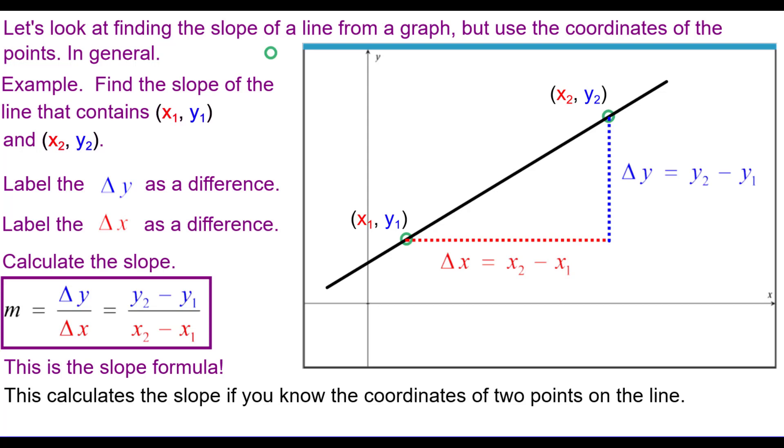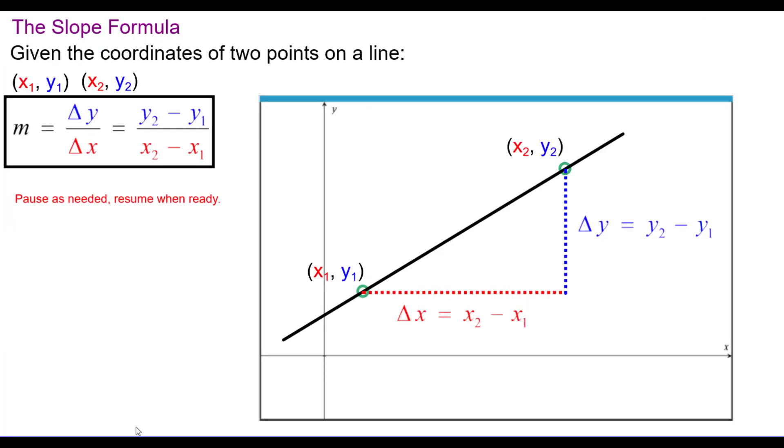And this is the slope formula. This calculates the slope if you know the coordinates of two points on any line. So, summarizing, this is what our graph looks like, this is the names of the points generically, and this is the slope formula. Pause as needed. Resume when you're ready.